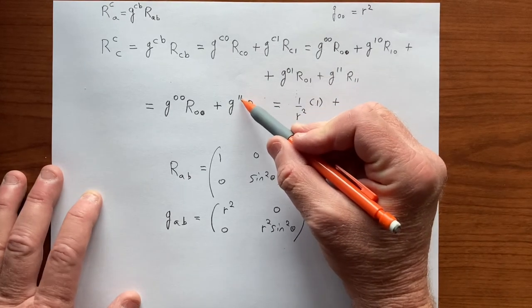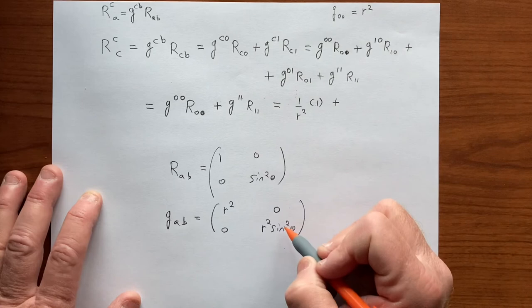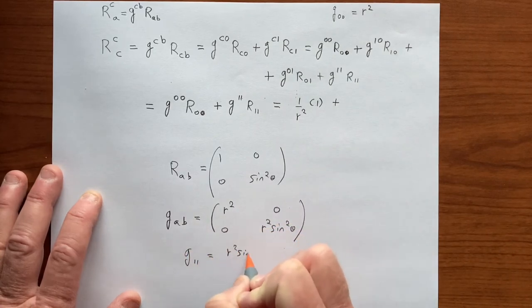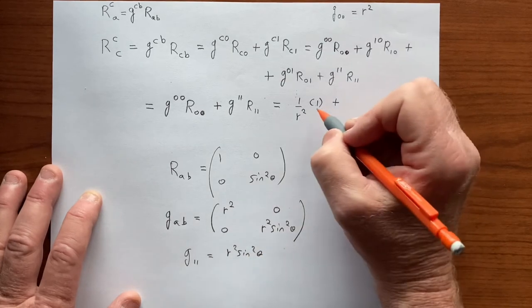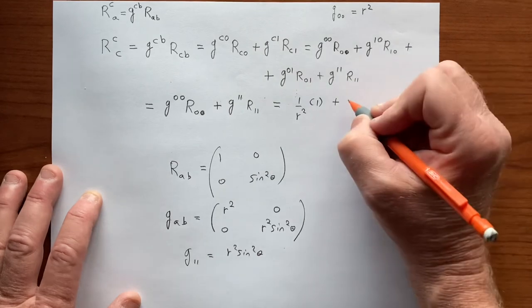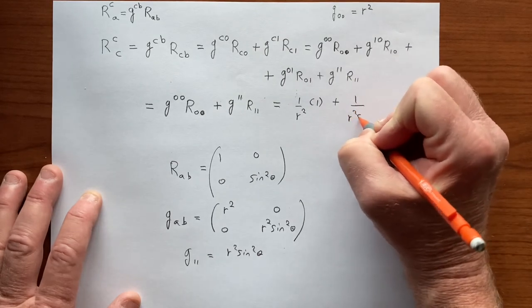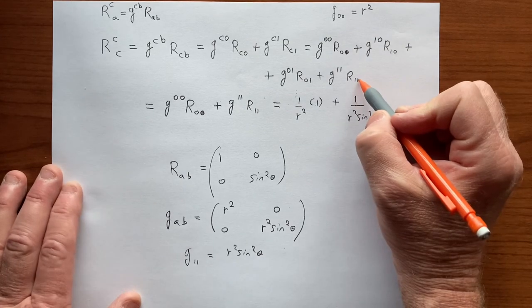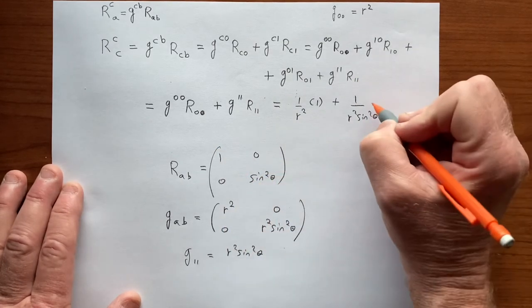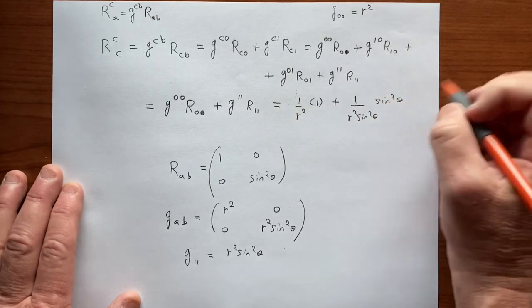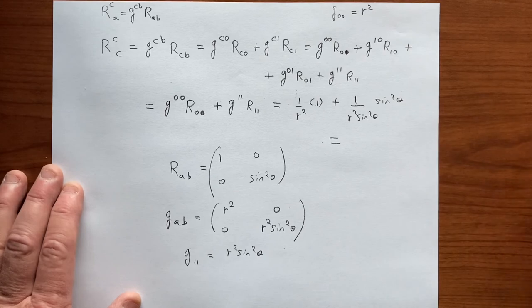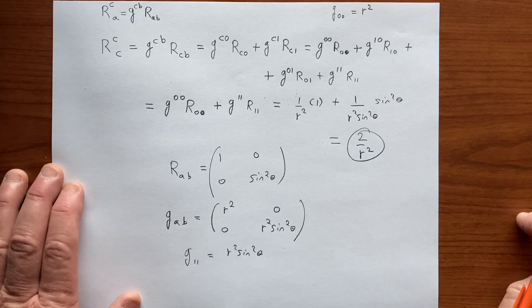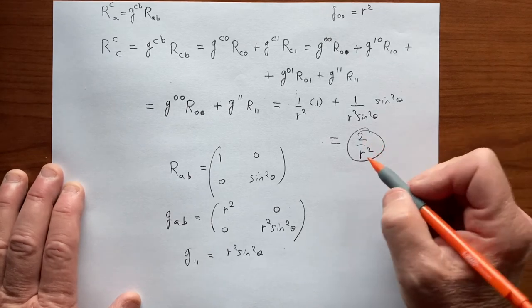So where are we, we have G^11 upper, so this is G_11 lower. So G_11 is R² sin² θ, and the inverse of that is what we need here. So we have 1 over R² sin² θ, and we're multiplying that by R_11, which is sin² θ. And so we get, the sin² terms cancel out, we get 2 over R². And of course, at every single point on the sphere of radius R, it's the same, it has the same curvature.